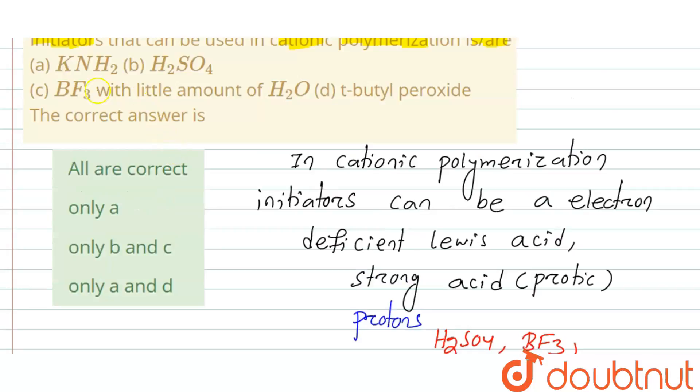From our options: given KNH₂, given H₂SO₄, given BF₃ with a little amount of H₂O, and given t-butyl peroxide. Our correct options are H₂SO₄, which is a strong acid, and BF₃, which is a Lewis acid.